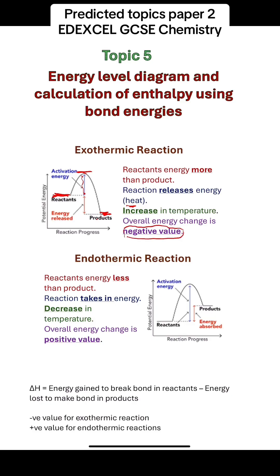For an endothermic reaction, the reactant energies are less than the product energies, and the reaction takes energy in, so there is a decrease in temperature and the overall energy change is a positive value. On the energy profile, the reactant energy is lower than the product. You should be able to calculate the overall energy change, which is the energy gained to break the bonds in the reactants minus the energy released to make the bonds in the products. A table of bond energies will be provided.